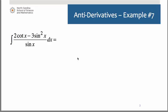This one will require us to rewrite it and sometimes you have to be a little creative because you only have so many rules that you know, therefore you need to take what you're given and turn it into something that matches up with those rules. So in this one, we have 2 cotangent of x minus 3 sine squared of x all over sine of x dx.